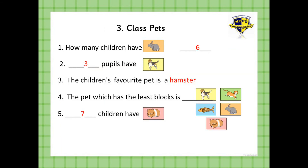Number two — I have to fill in the blank with how many pupils have a dog. So I go to the dog and count the blocks. One, two, three — so three pupils have a dog. The children's favourite pet: how do I know? There are more children who have this pet because it has more blocks than any other pet. We can see it's the hamster and it has seven. So seven pupils have a hamster.